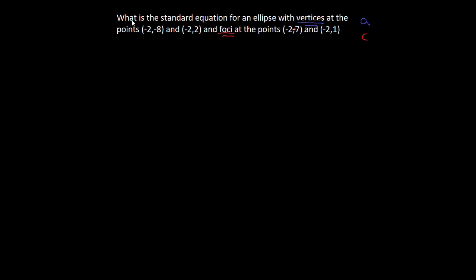Next, I want to look at the actual points. I notice immediately that there are no zeros here, which means we've left the realm of an ellipse centered at the origin — meaning we're going to have some form of H and K. Looking at the vertices, the x-coordinate is negative 2 in both points, so the x's are the same, which means the y's are changing, and the ellipse is oriented vertically.